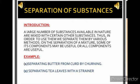There are different methods of separation, and some or all components may be useful. For example, separating butter from curd by churning is a process by which butter is separated from curd. Another common example is separating tea leaves using a strainer — a very common method since everyone at home takes tea every morning.